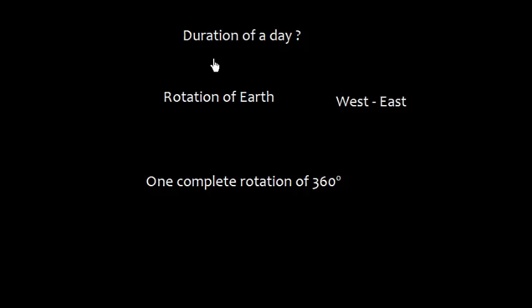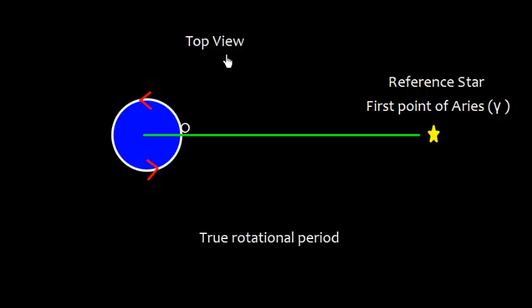So now first let us discuss what is the duration of day. We are going to start the time relationship with the day. Well, we know that the earth rotates west to east and one complete rotation of 360 degrees takes in a day. Well, is it 24 hours? The question is: Is this rotation 24 hours?